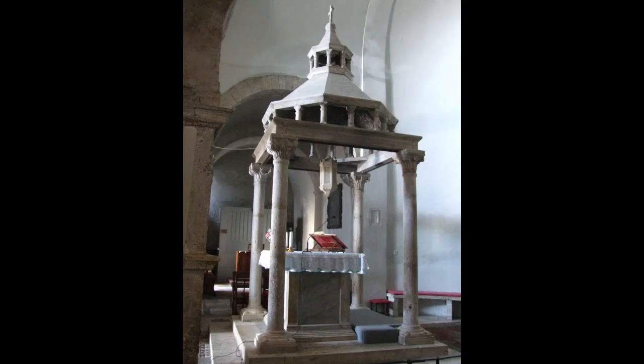The freestanding dome ciborium-like structure that stood over what was thought to be the site of Jesus' tomb within the Church of the Holy Sepulchre in Jerusalem was called the Aedicula, and was a key site for pilgrims, often shown in art — for example in the Monza Ampullae.